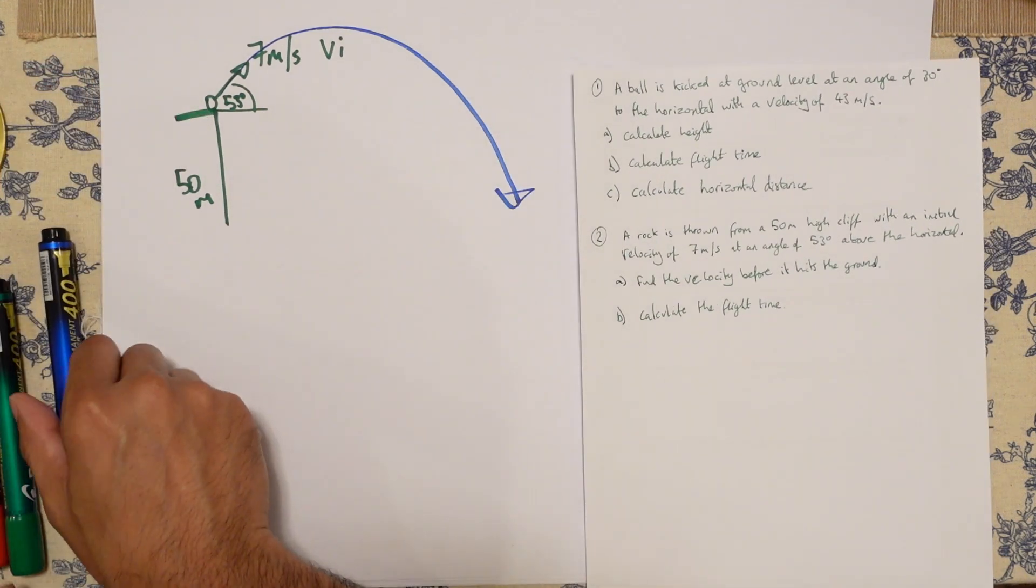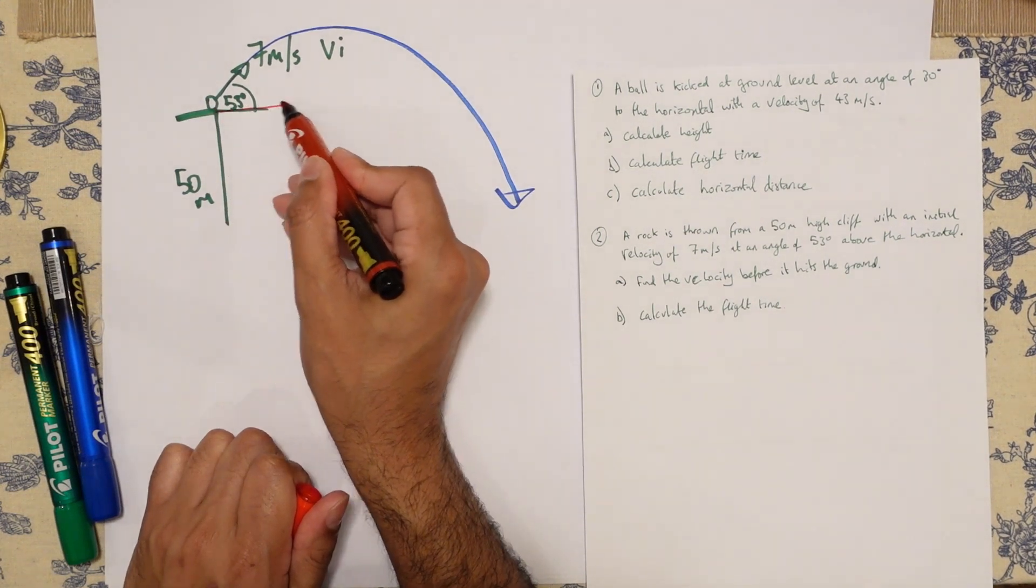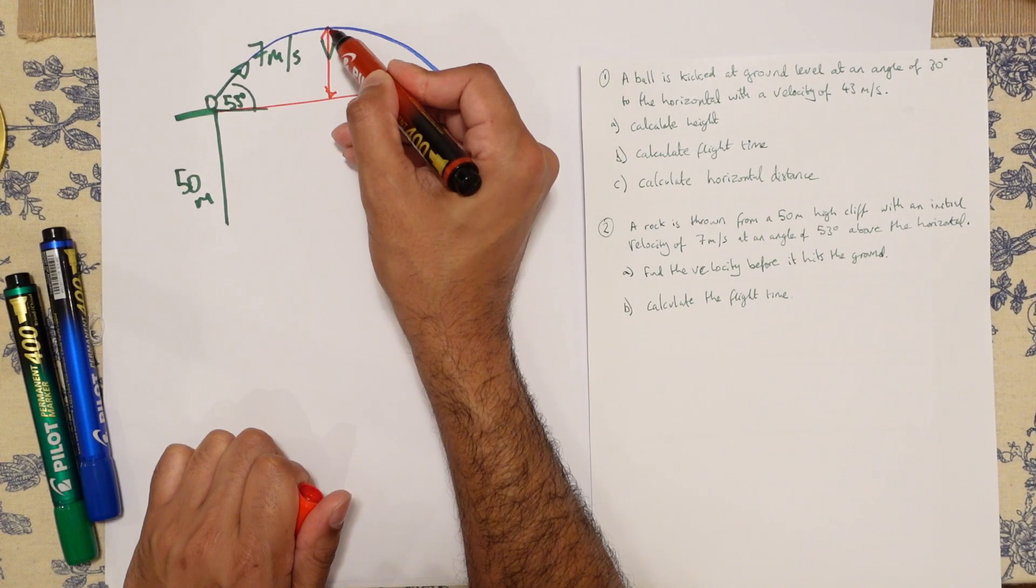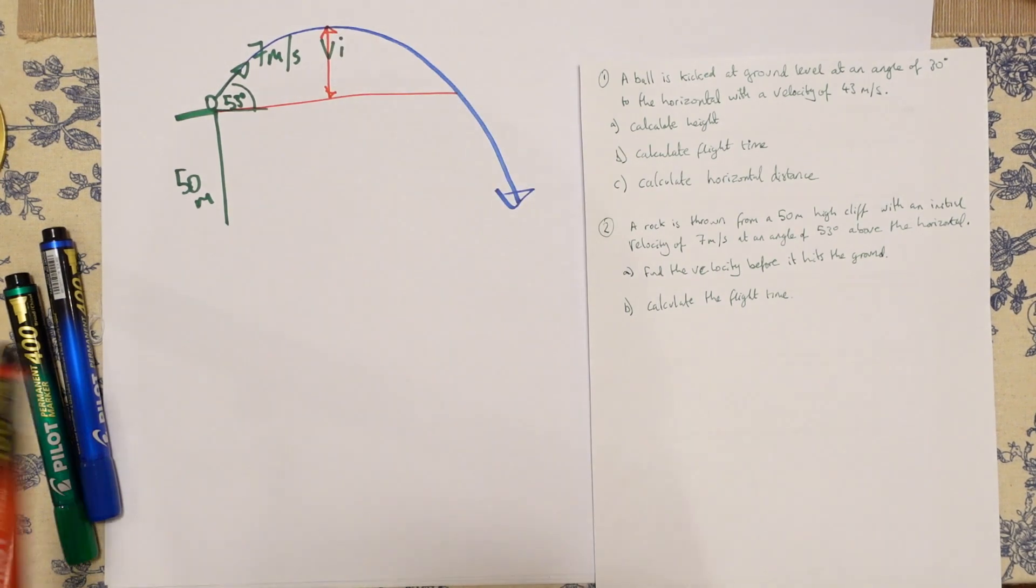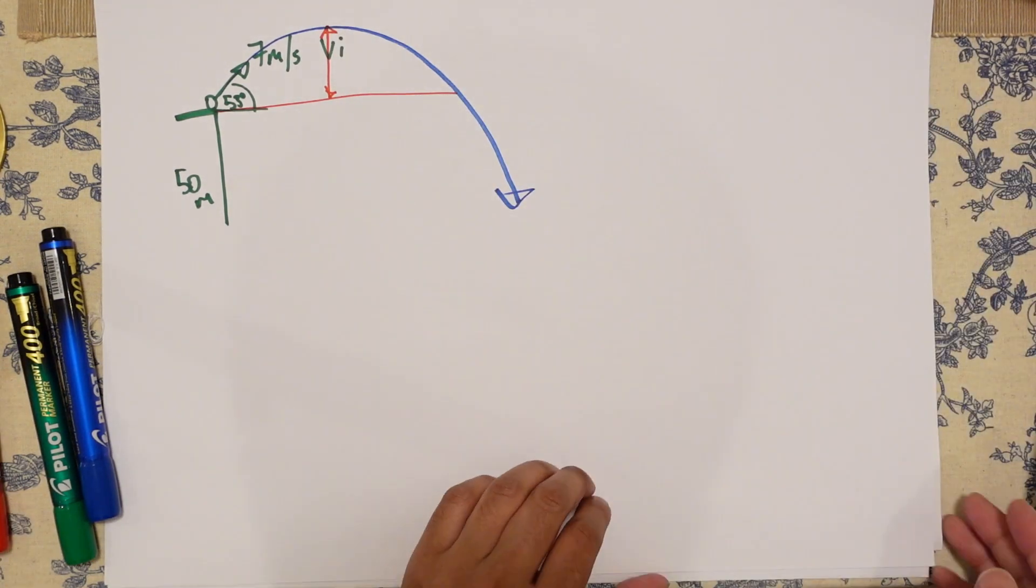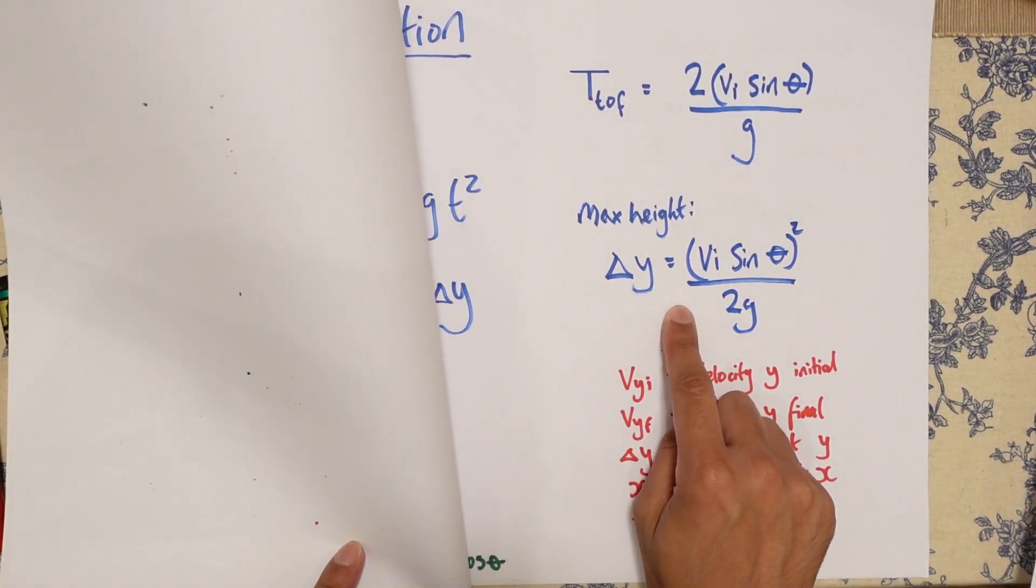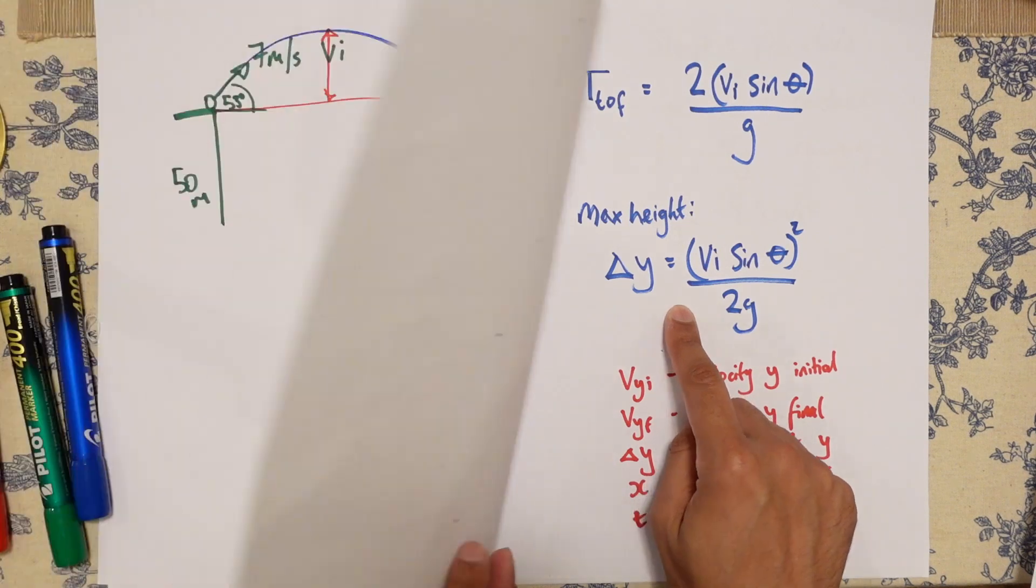So we're going to try and find that height over here. And just like before, we have our equation. Our equation is VI sine theta squared divided by 2G.